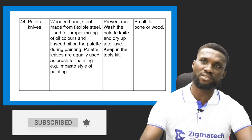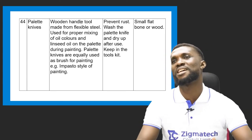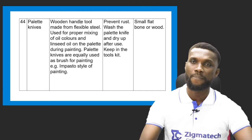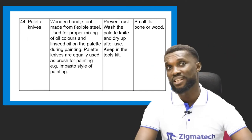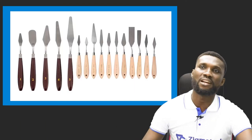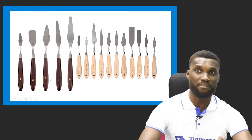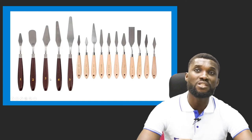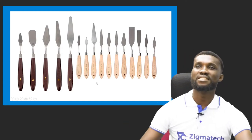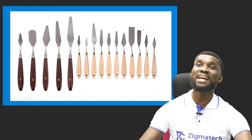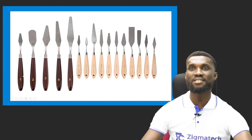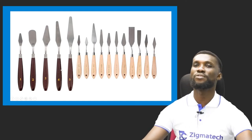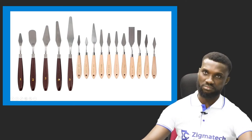How can you improvise a palette knife when you don't have one? You can use a flat piece of wood, flat zinc, or any flexible metal to mix your color. The palette knife comes in different sizes, shapes, and forms — some are bigger and longer than others. My favorite palette knives are number one and number three, though I also use four and five.